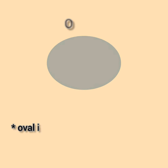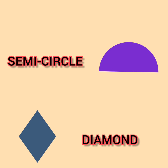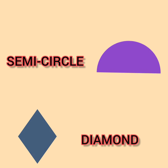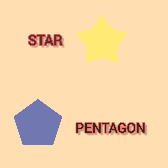Other important 2D shapes are semi-circle, diamond, star, pentagon, and hexagon.